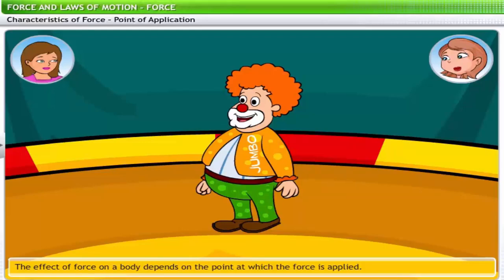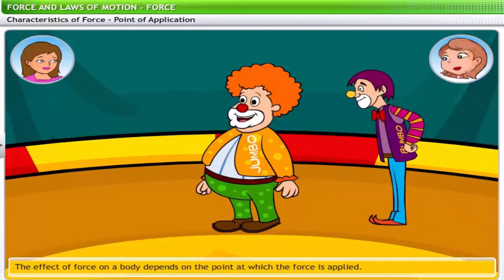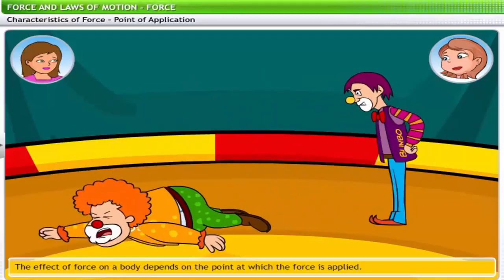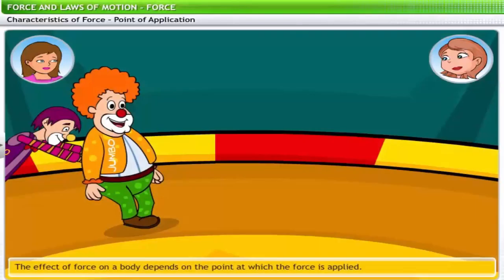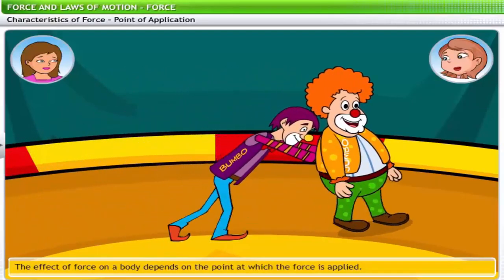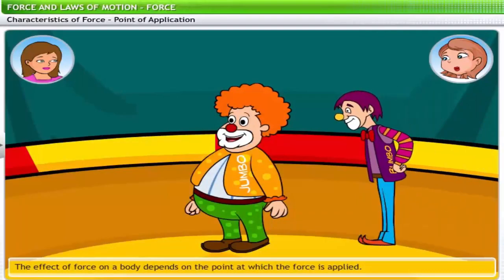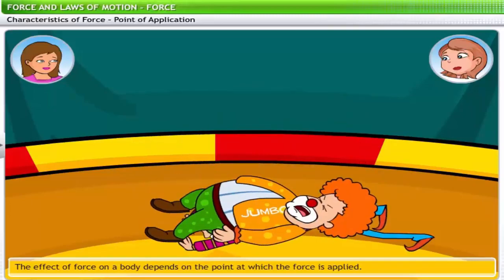Consider the scenario where a clown in a circus is pushing another clown. When the clown is given a push on his upper body, he falls face down. If the point of applying the push is changed to the middle of his body, the clown doesn't fall at all — he simply moves ahead. When the push is directed towards his lower body, the clown loses balance again and falls on his back.